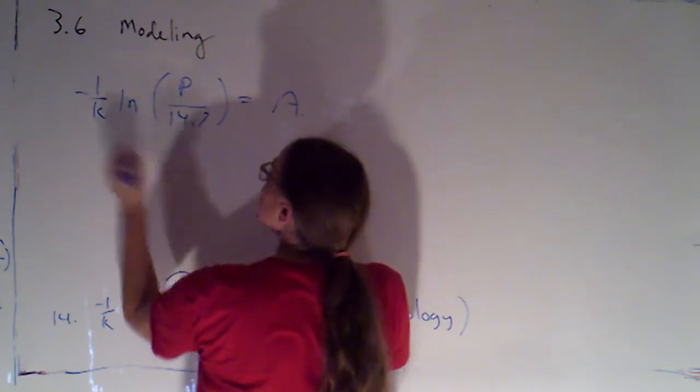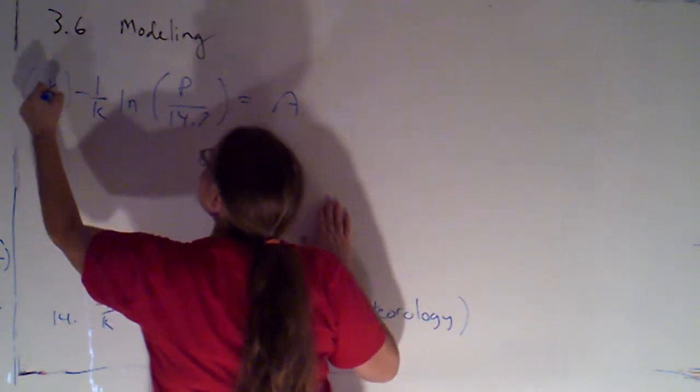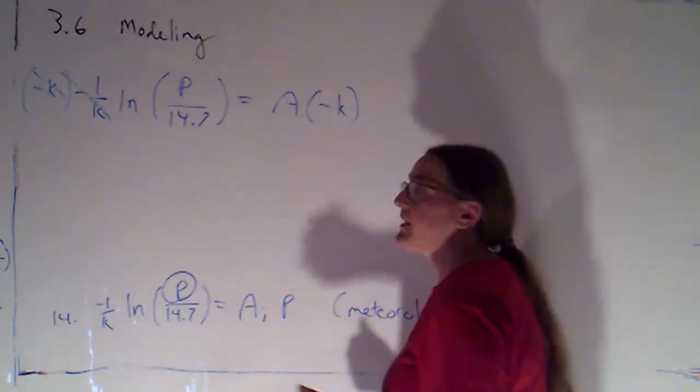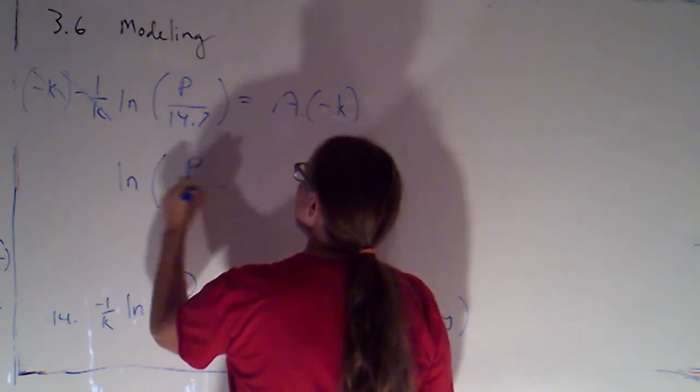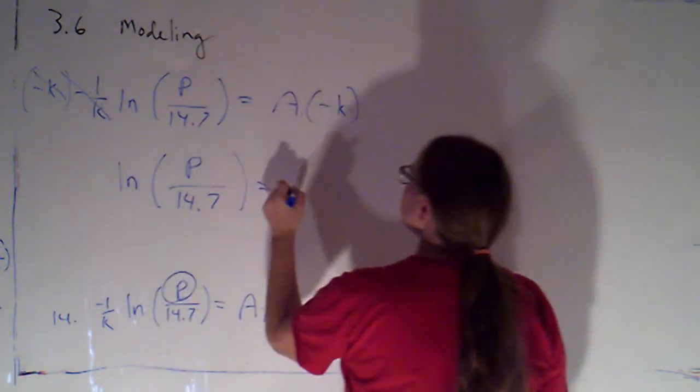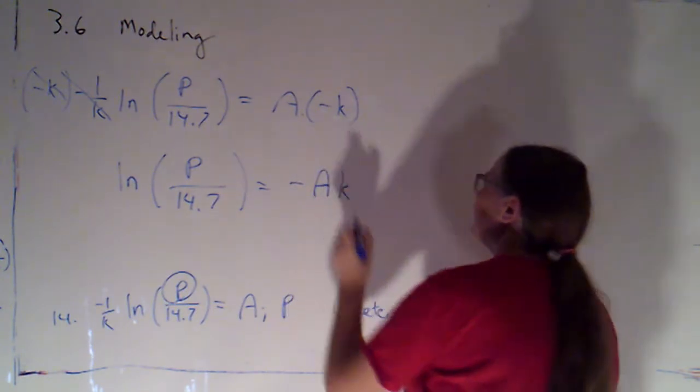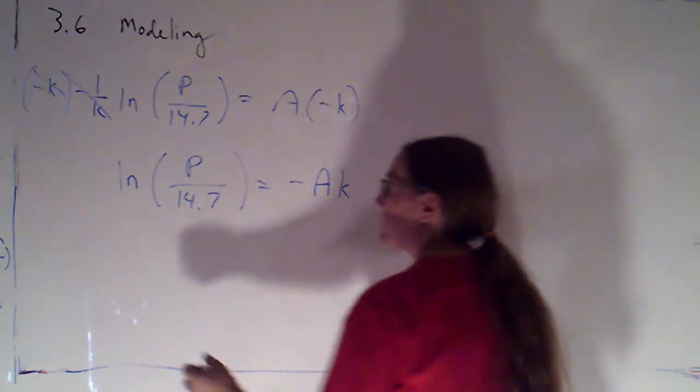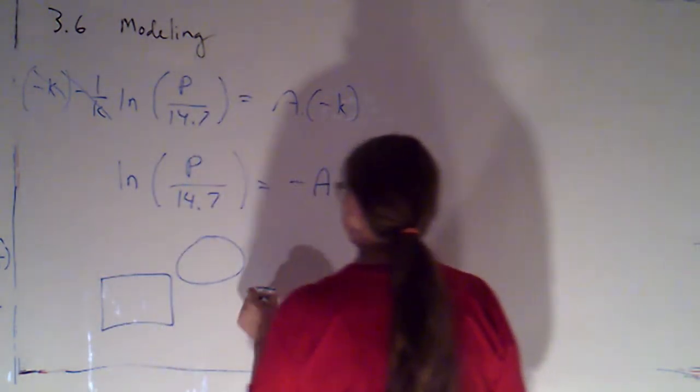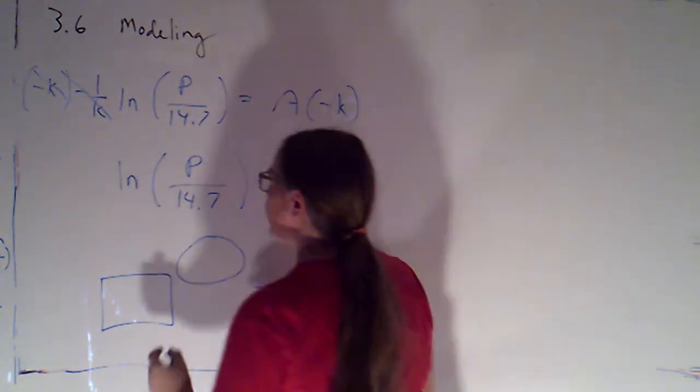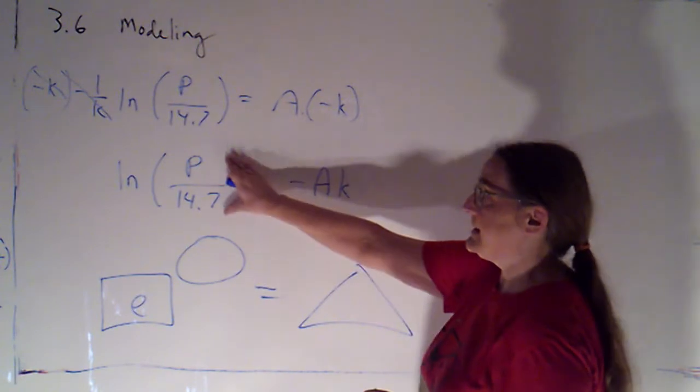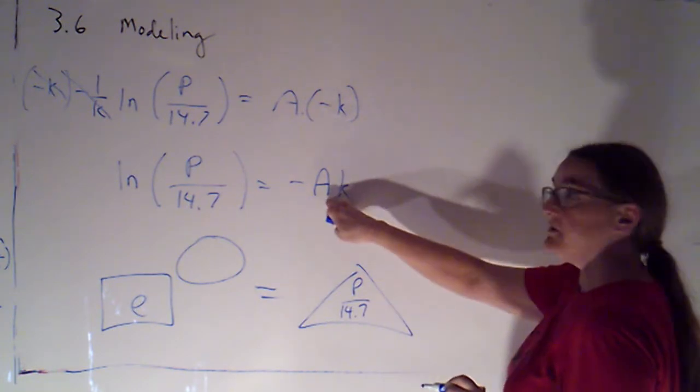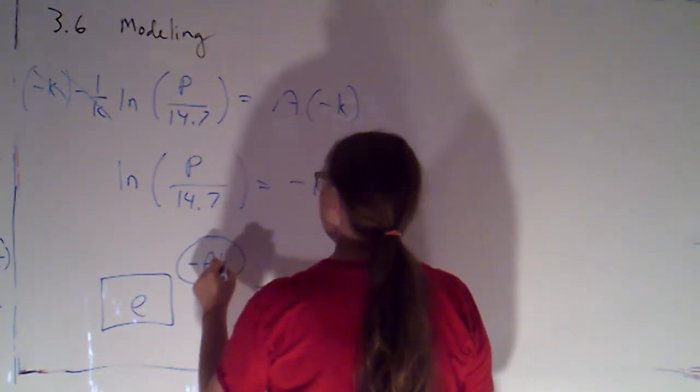So I want to isolate the log, so let's multiply both sides by a negative k. That way the negative k and the negative 1 over k will cancel, so we'll have natural log of p over 14.7 is equal to negative a times k. Now that I've isolated the log, I can rewrite that in exponential form. So the exponent I need when e is my base to get this, p over 14.7, that exponent is this, negative a k.